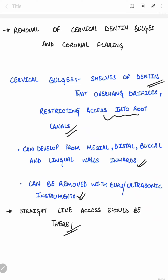Straight-line access is essential for a proper access cavity preparation. All guidelines should be followed and all objectives of access cavity preparation should be fulfilled, whether it is an anterior or posterior tooth. This was all about access cavity preparation in posterior teeth. Thank you for watching.